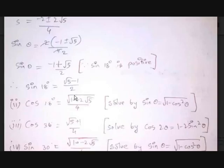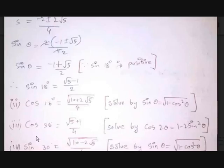For cos 36 degrees, the value is (√5 + 1) / 4. Solve it using cos 2 theta = 1 - 2 sin² theta, substituting sin 18 degrees. And sin 36 degrees = √(10 - 2√5) / 4, which you can get by substituting sin theta = √(1 - cos² theta) with cos 36 degrees.